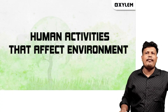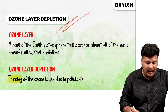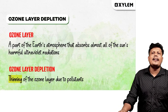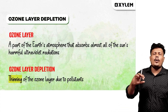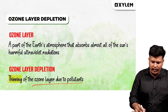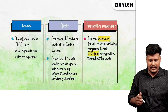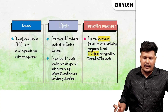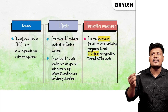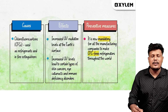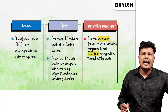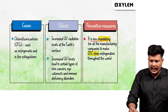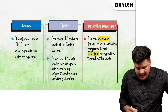The last topic is human activities that affect the environment. Here we call ozone layer depletion. The ozone layer is part of Earth's atmosphere in the stratosphere. The ozone layer stops harmful ultraviolet radiations. The thinning of the ozone layer is due to pollutants, especially chlorofluorocarbons. CFCs are used in refrigerants and fire extinguishers. The effects include increased UV levels leading to skin cancer, eye irritation, eye cataract, and immune deficiency disorder. It also affects vegetation. As a prevention measure, it is mandatory for all manufacturing companies to make CFC-free refrigerators.